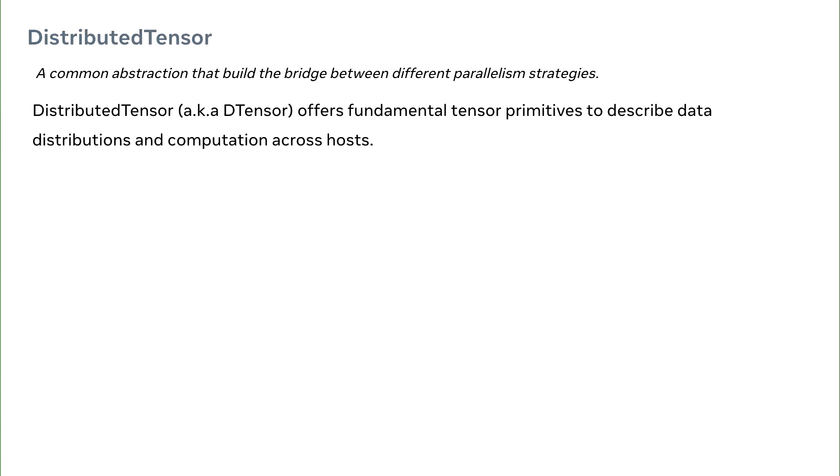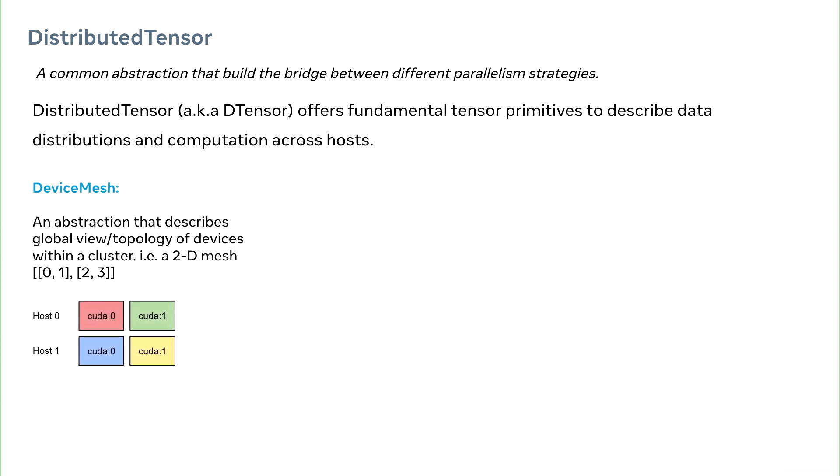D-tensor consists of two important concepts. The first concept is device mesh, an abstraction that describes the topology of devices within a cluster. For example, we could construct a device mesh that describes two hosts, each with two GPUs.